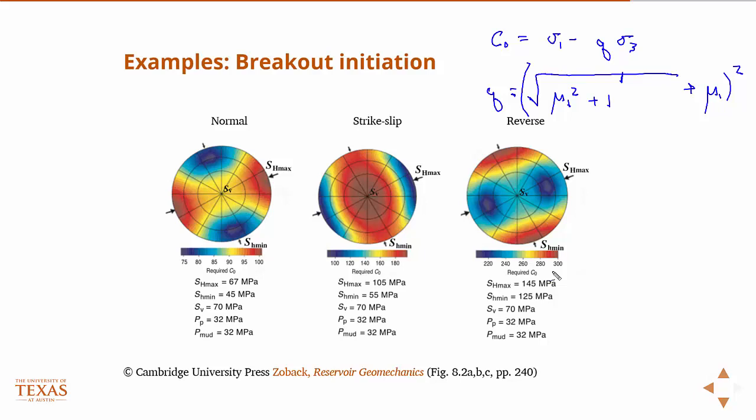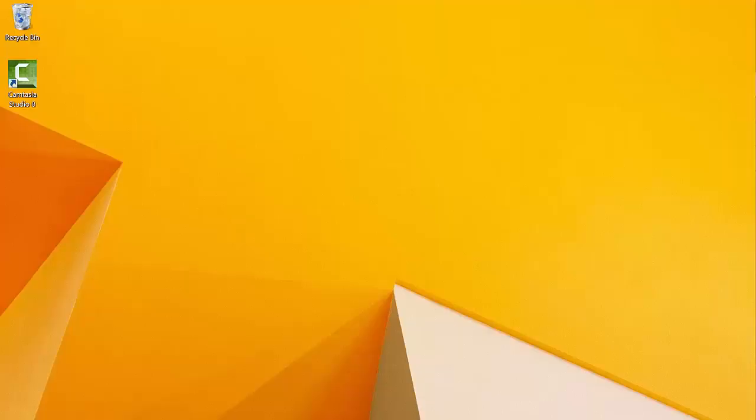Now, keep in mind that this is just a plot of the initiation of breakouts. Remember what we talked about before, just because you have some breakouts doesn't mean you necessarily have an unstable wellbore. Really, the stability has to do with the width of the breakouts and the fact that it can lead to washout or collapse.